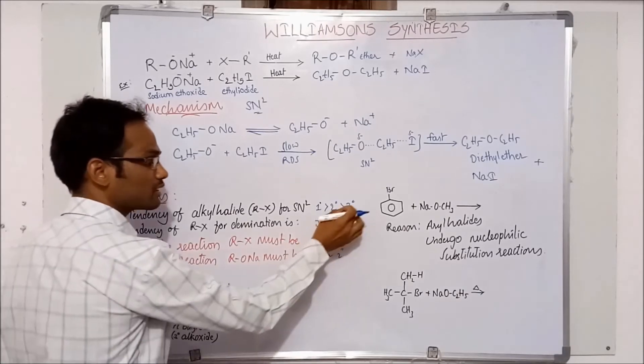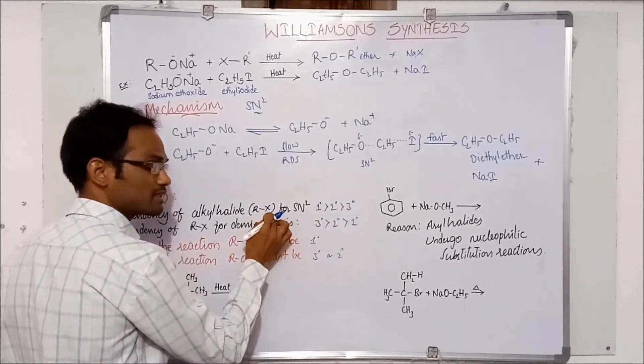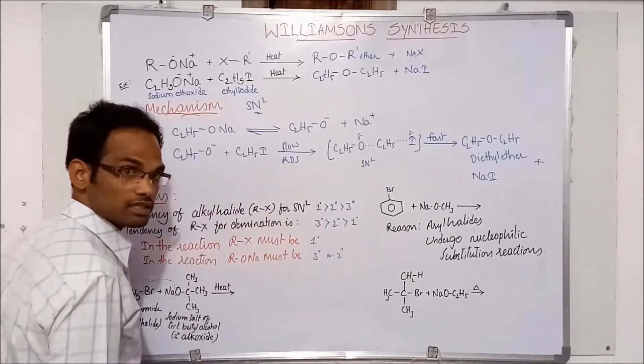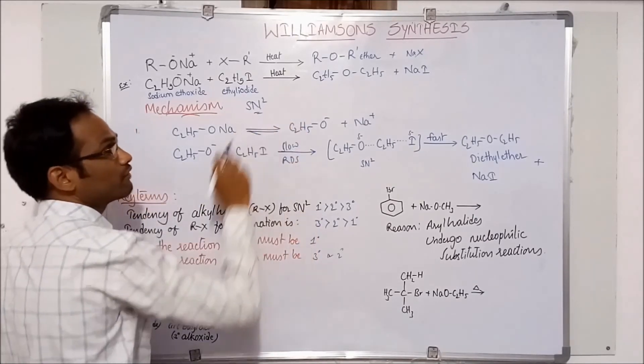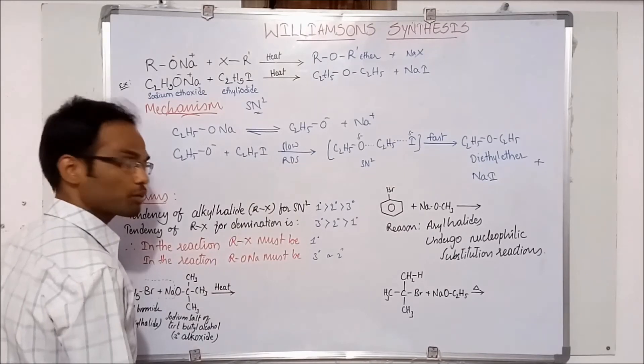And the sodium alkoxide ions which we take in the Williamson synthesis must be tertiary or secondary. That means if we take tertiary alkyl halides, elimination reactions are more preferred. And if we take primary alkyl halides, Williamson synthesis is more preferred.